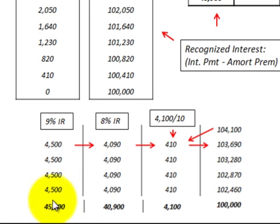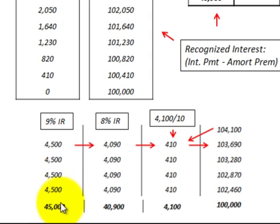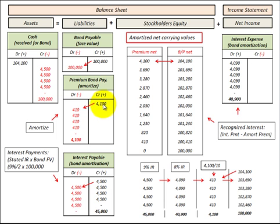Let's look at the total interest paid to bondholders each period: ten payments of $4,500 totals $45,000. The total interest expense we recognized on that bond is $40,900. Subtracting $40,900 from $45,000 gives us the premium to bonds payable of $4,100.